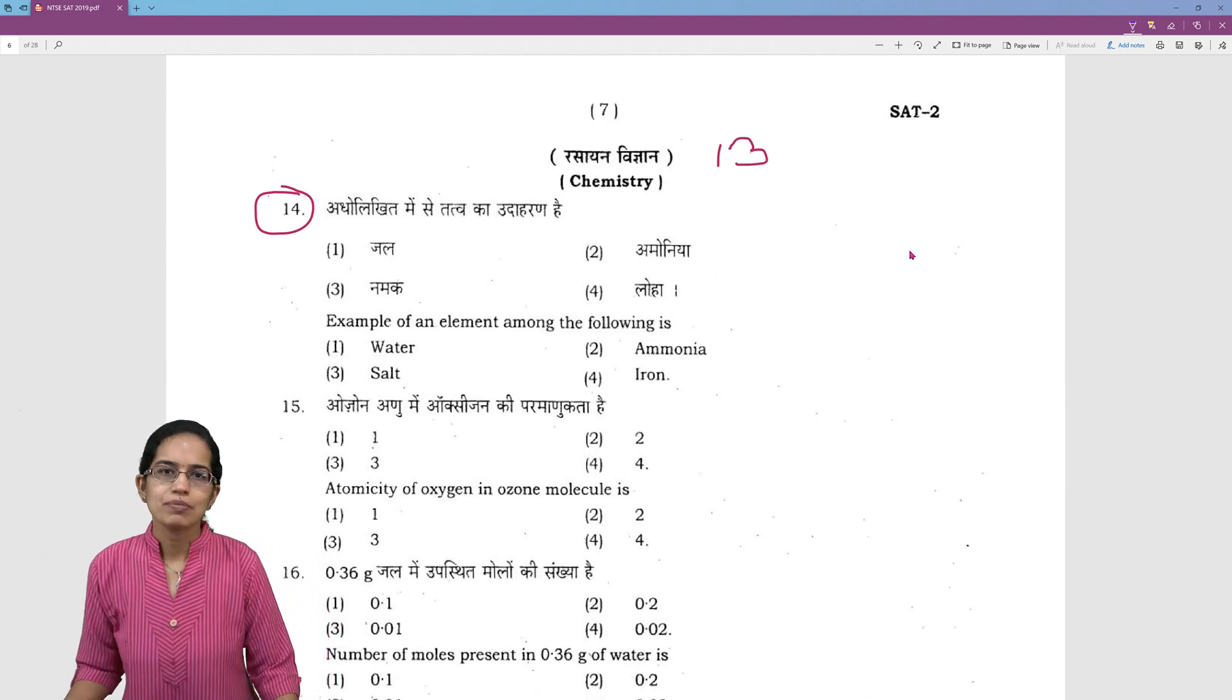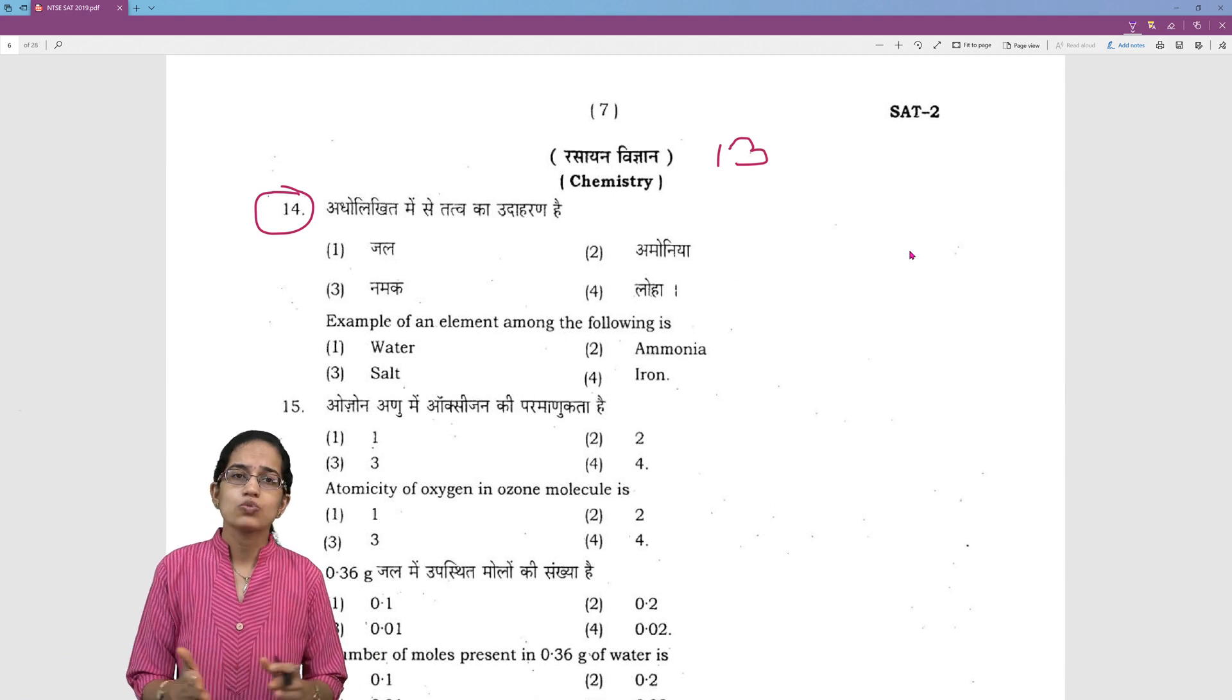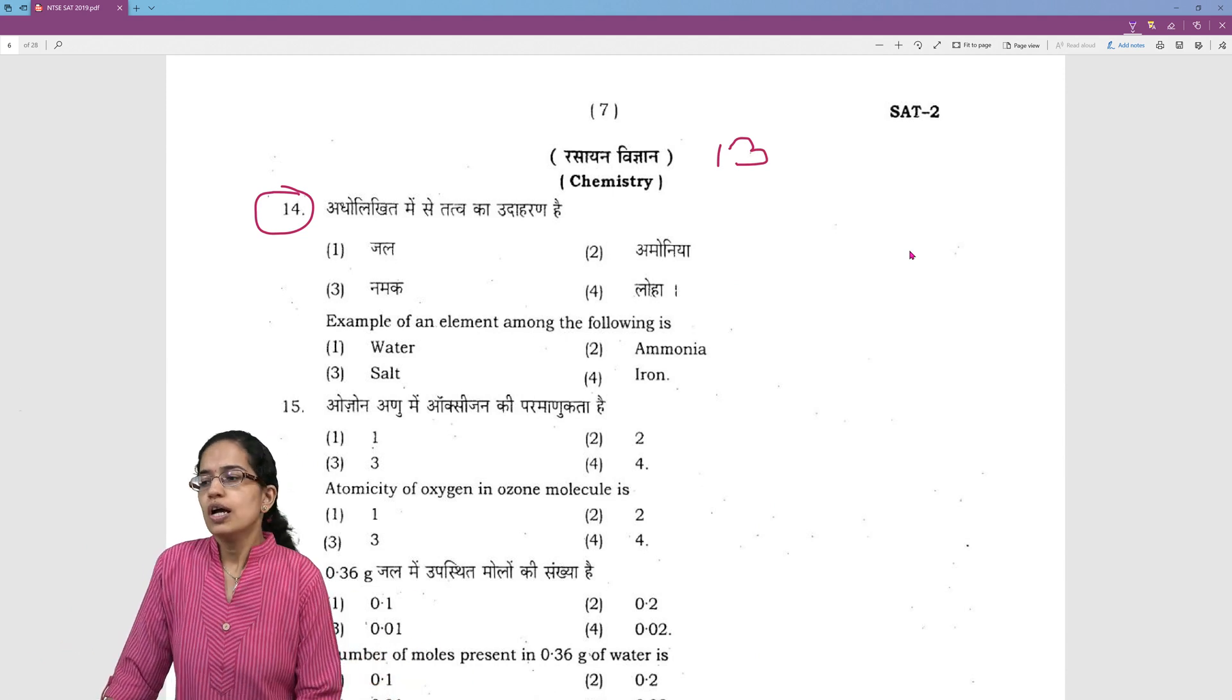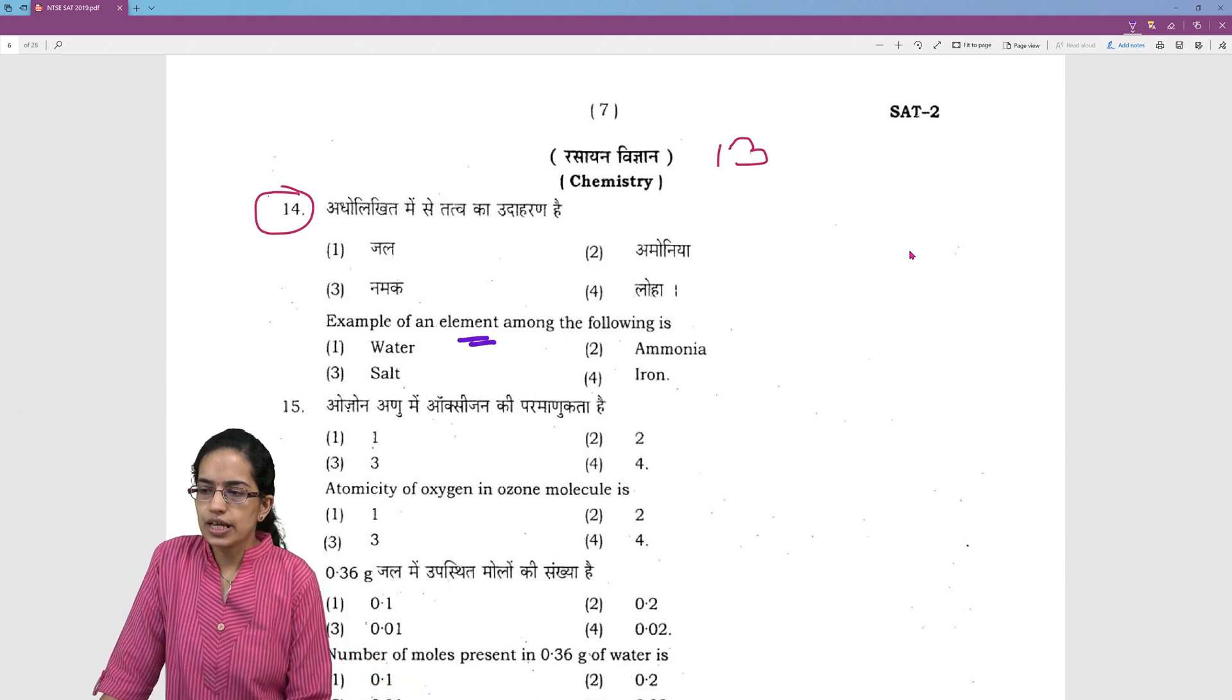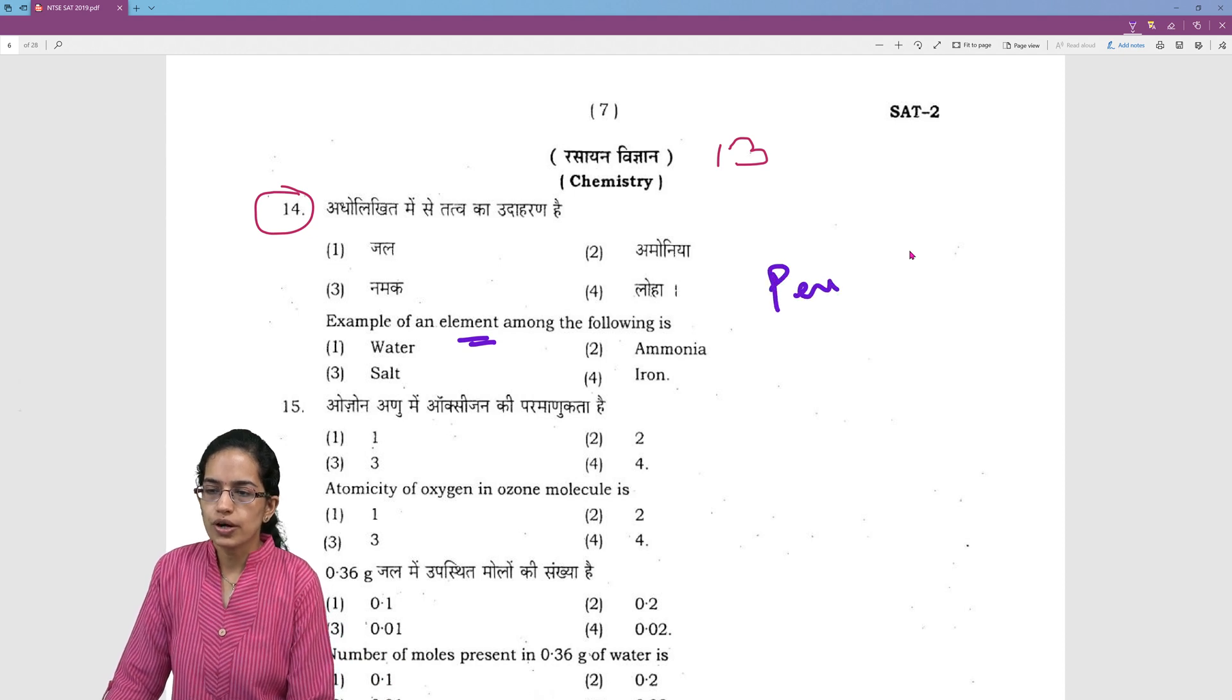In chemistry very simple problems. What is the formula for this? What is the formula for so and so? Then we have which is an example of element. So you just need to know the periodic table in detail